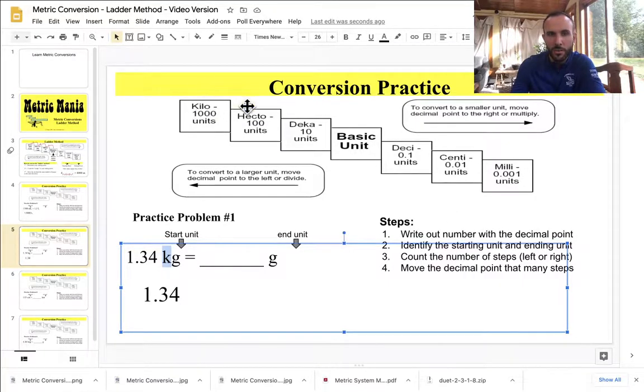So now I need to count how many steps and whether I'm moving left or right. So kilo, one, two, three. Three jumps to the right. So here's our decimal point. And I need to jump it three times to the right. So watch. Here's one jump, two jumps. I need to add a zero. So one jump, two jumps, three jumps.